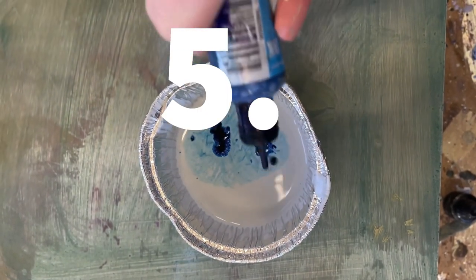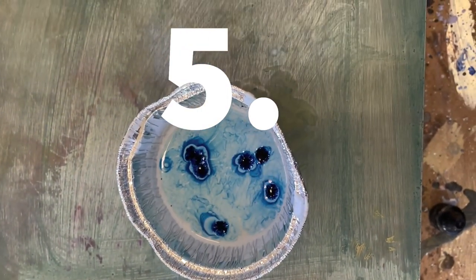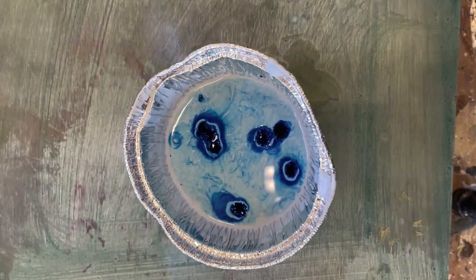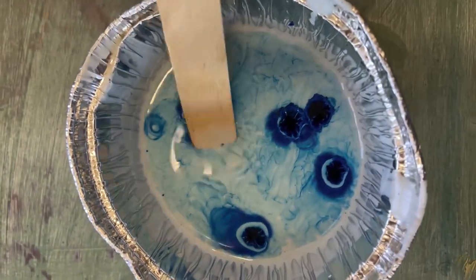Finally, number five, you can add ink to encaustic paint. A little for transparency or a lot for more color, you choose. Stir it up really well and apply directly to your board.